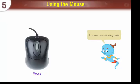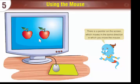A mouse has following parts: Mouse, Scroll wheel, Mouse wire, Left button, Right button. There is a pointer on the screen which moves in the same direction in which you move the mouse.